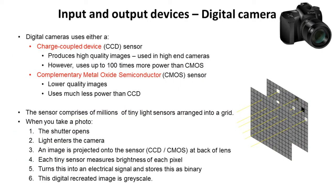The second device to be aware of is the digital camera. Digital cameras use either CCD (charged coupled device) sensors or CMOS (complementary metal oxide semiconductor) sensors. The CCD produces very high quality images; however, it's only really useful in high-end cameras because it's quite bulky and uses up to a hundred times more power than CMOS. CMOS therefore produces lower quality images but with much less power consumption.